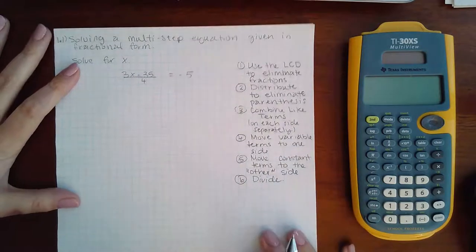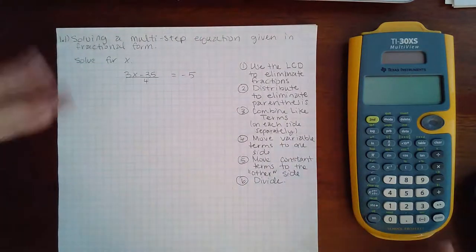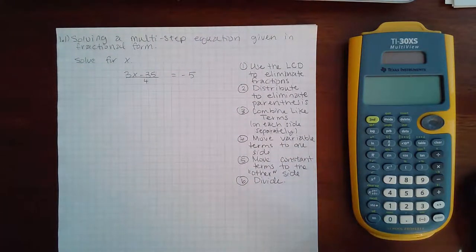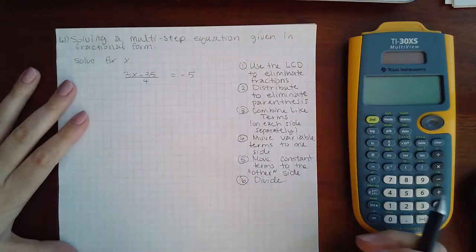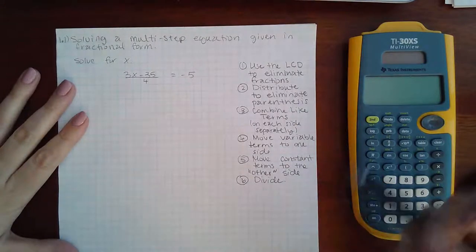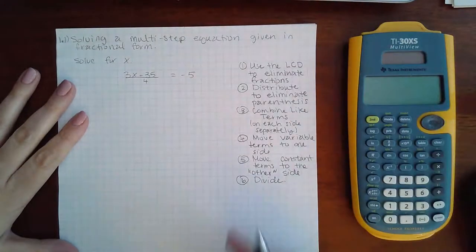Now, not every time do we have to do all six steps. Sometimes we get lucky and we only need to do one step or three of the steps or five of the steps. So we need to be able to look at the problems and identify going down the list whether these steps apply.